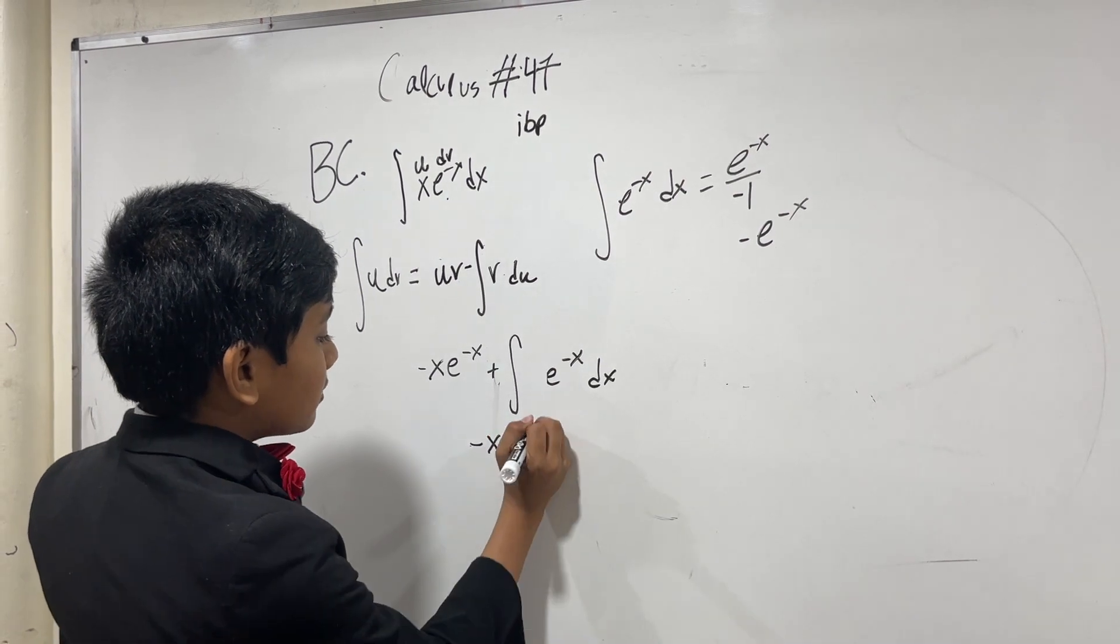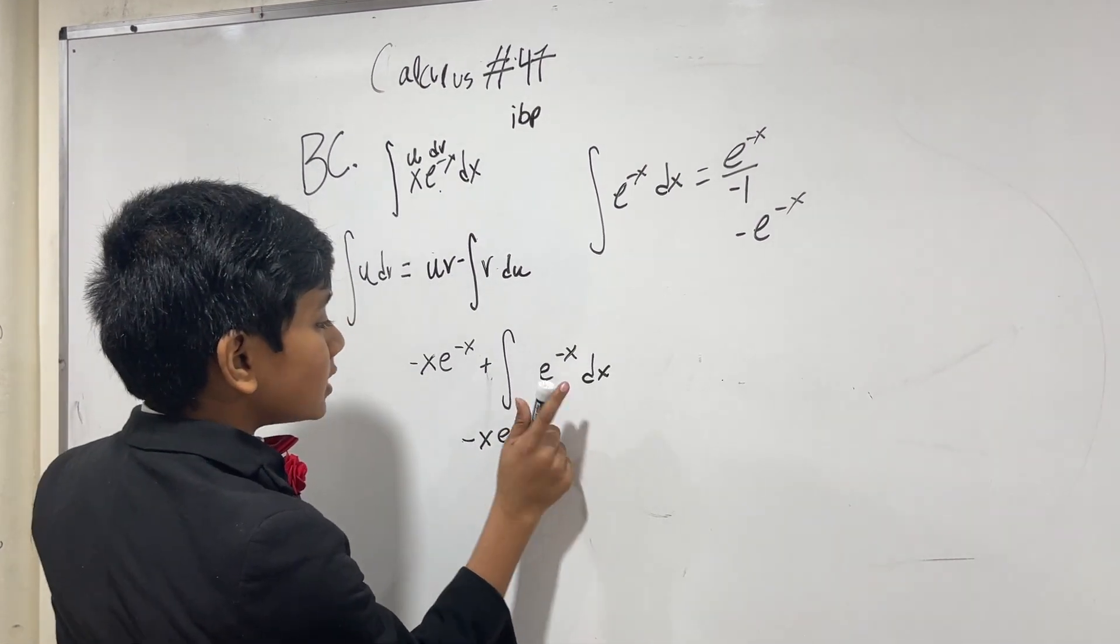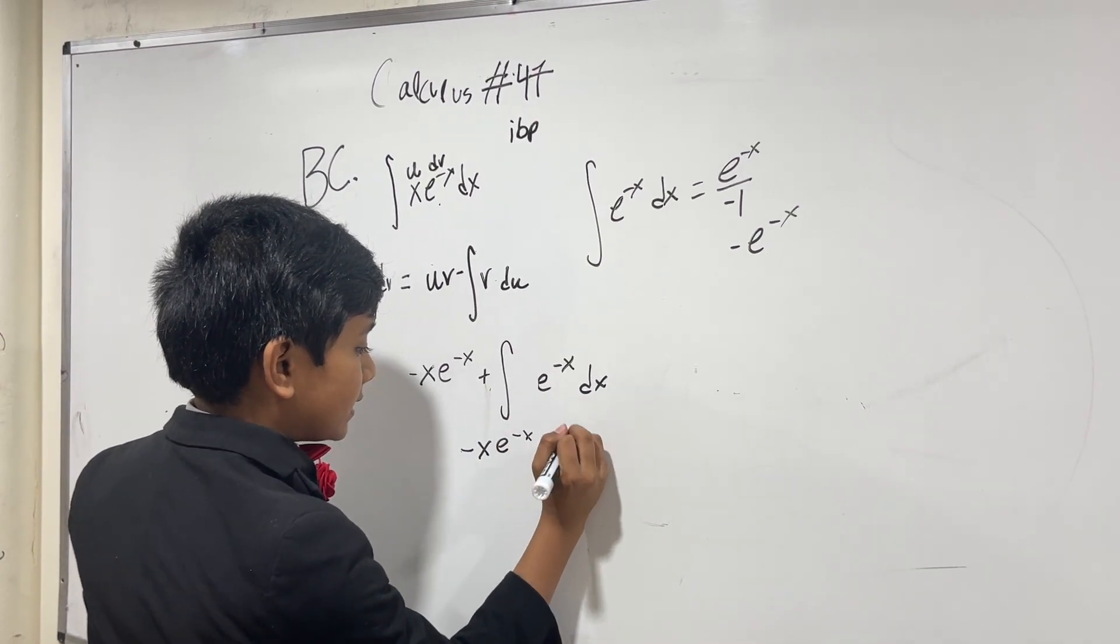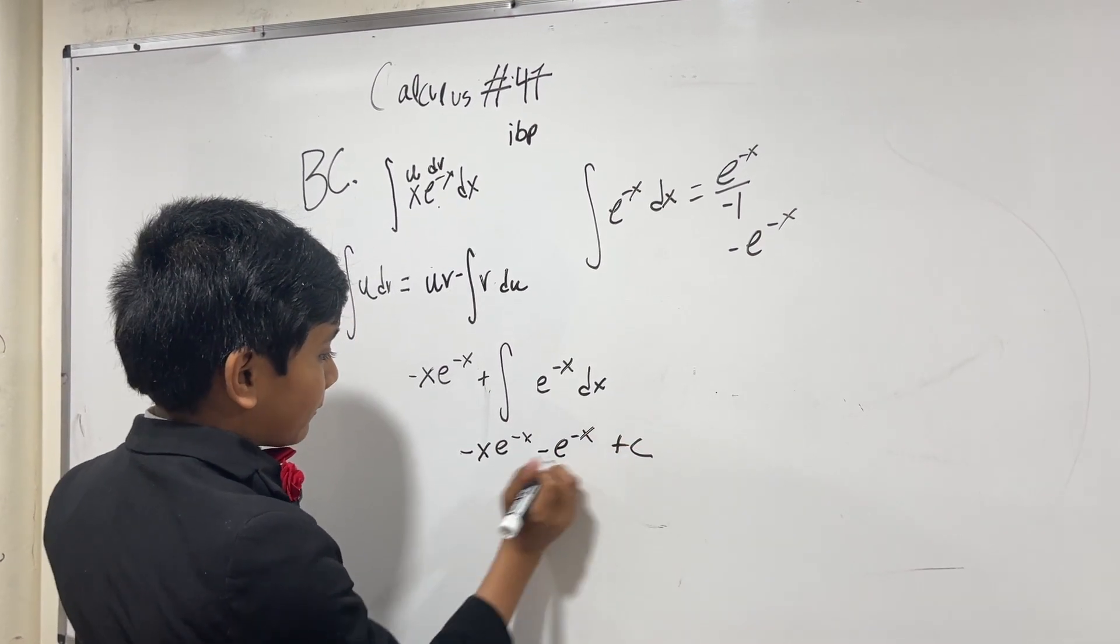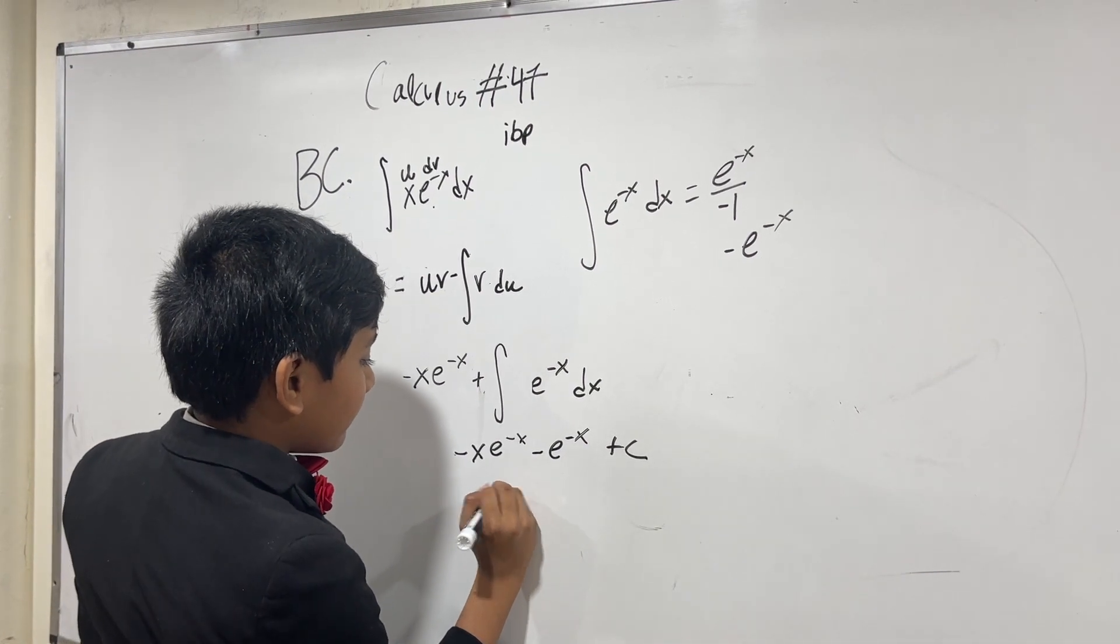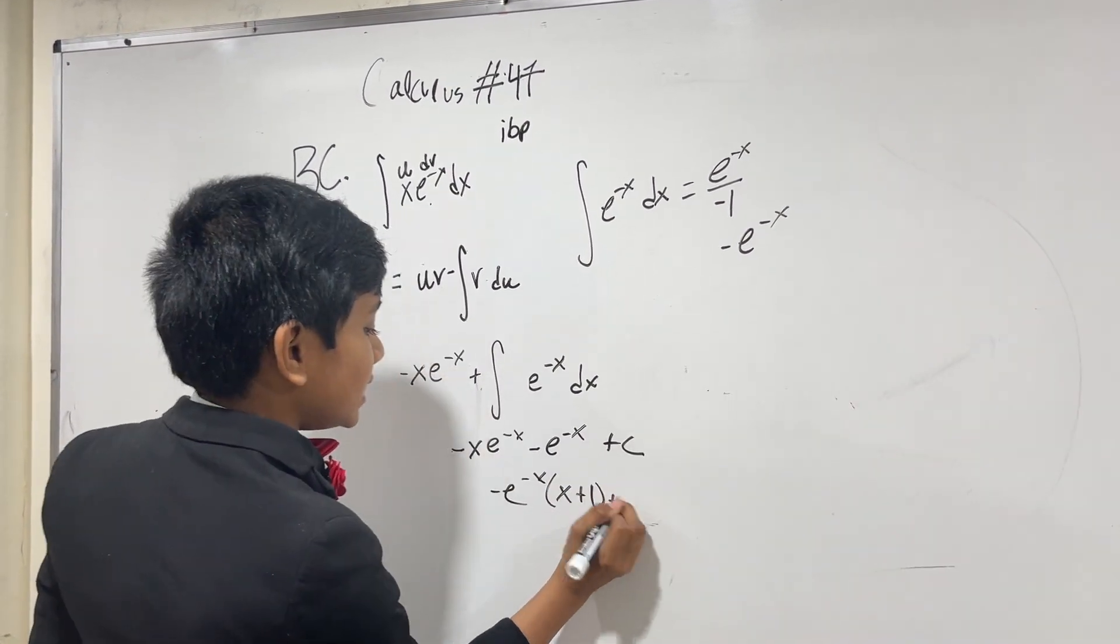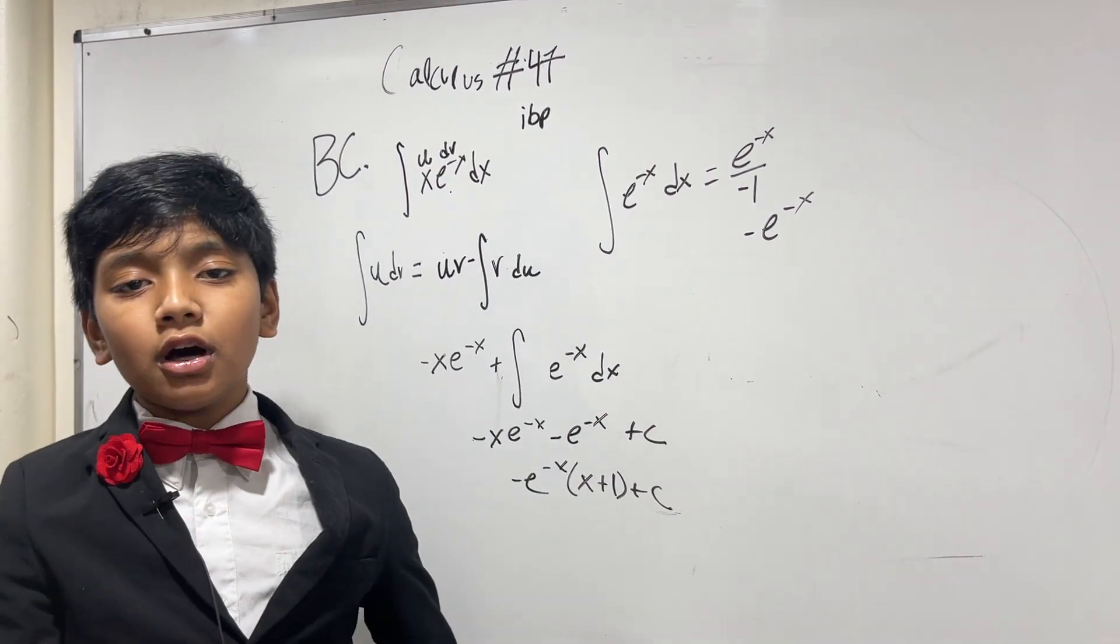So, this is our integral. Minus Xe to the minus X plus, well, what is this? Well, we already know that the integral of this is minus e to the minus X. Then we got to add the plus C. Then we get minus e to the minus X times X plus 1 plus C. That's the problem solved.